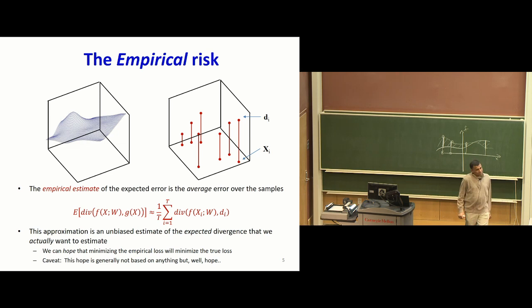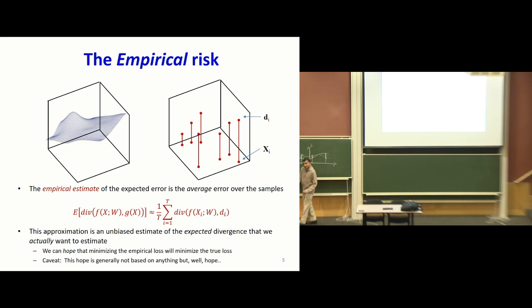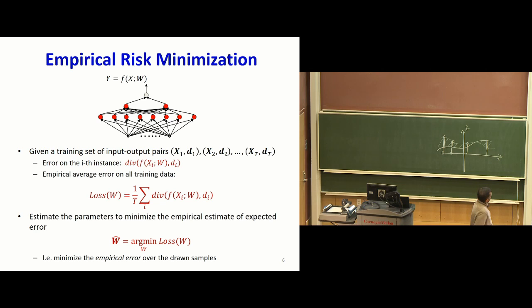Now this gap is quantified by a divergence function, represented as div. The divergence function has a specific property: when the two values are the same, the divergence will be zero. When the two values are not the same, the divergence is going to be a positive value, regardless of the direction in which the two differ. And the greater the difference, the larger the divergence is going to be. Furthermore, we want this divergence to be differentiable, in the sense that if this gets a little bit closer, you want the divergence to change in a manner that's quantifiable.